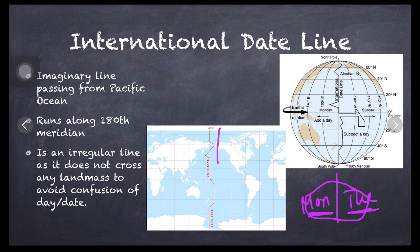So to avoid such confusion, you can see here international date line passes just from the water bodies, not from any landmass. So international date line is an irregular line as it does not cross any landmasses to avoid the confusion of day or date. Hence it is an irregular or zigzag line.